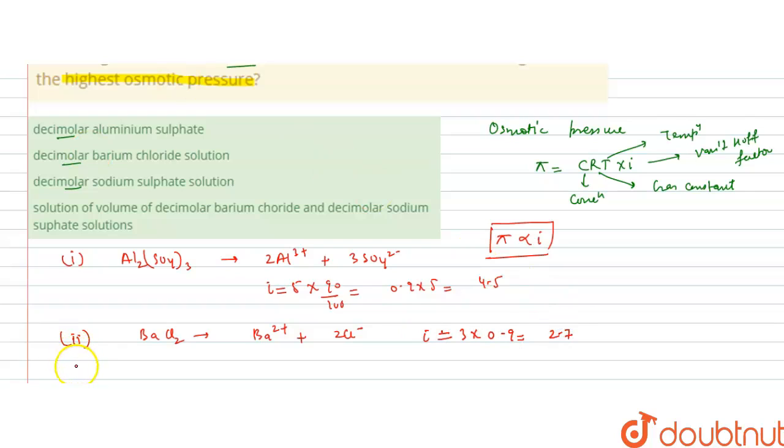Third option is decimolar sodium sulfate solution, Na₂SO₄. This dissociates into 2 Na⁺ and SO₄²⁻, which is 2 plus 1, so 3. Its I value will be similar to barium chloride: 3 times 0.9, which is 2.7.